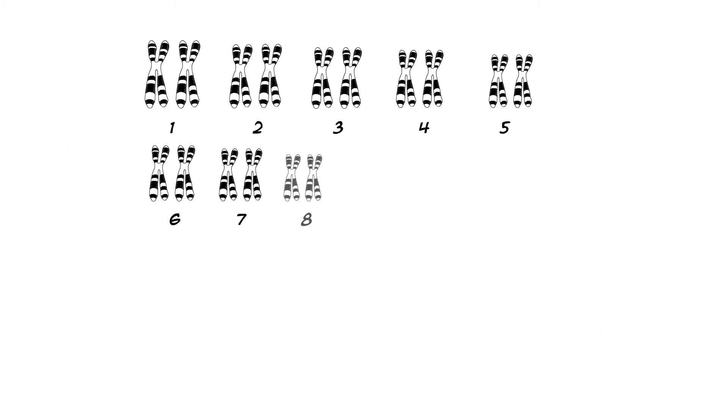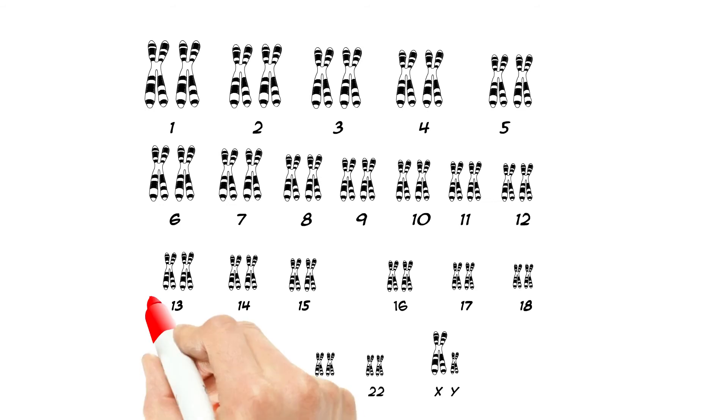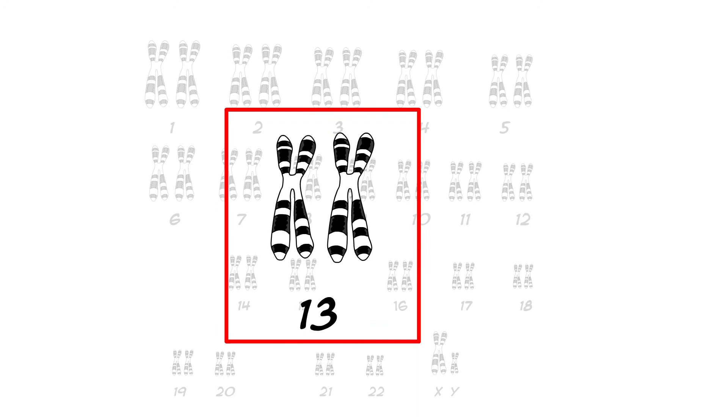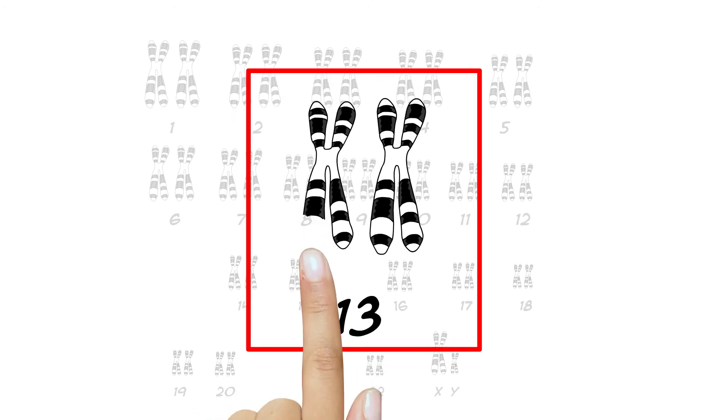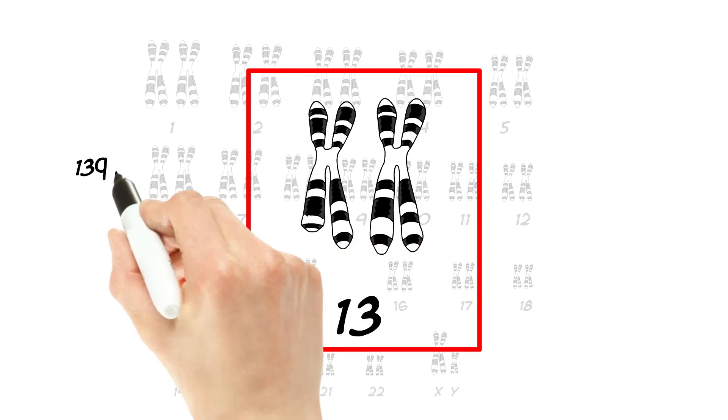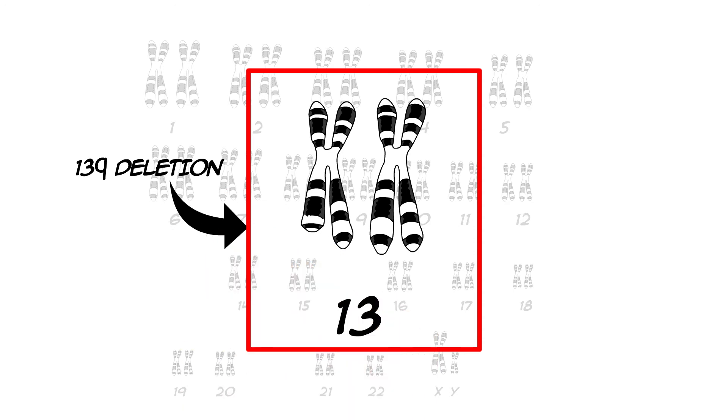The most common changes are a loss of part of certain chromosomes. Some people with CLL have part of chromosome 13 missing, which is called 13q deletion. People with this change tend to live longer than other people with CLL.